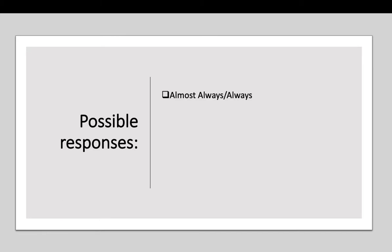Some possible responses on the feedback form could be: almost always, frequently, sometimes, rarely, or almost never or never. Keep those possible responses in mind as we go through each of the questions a trainer might choose to ask for feedback from a student. You may also have your own ideas, and sometimes you get feedback from students and realize there are contextual factors that may come into the situation as well.